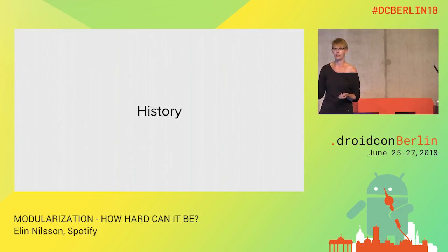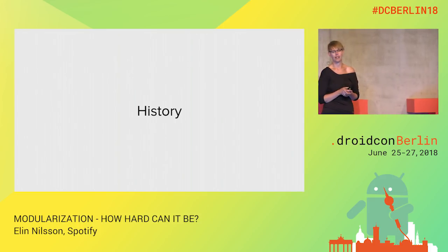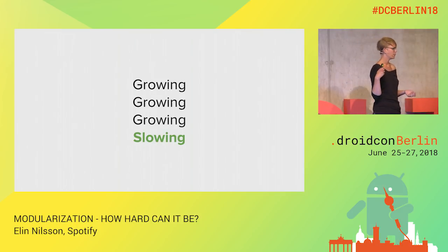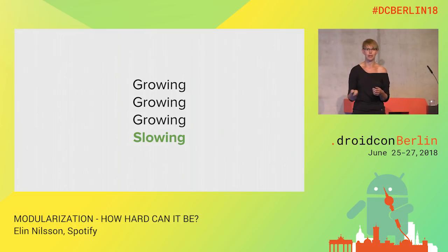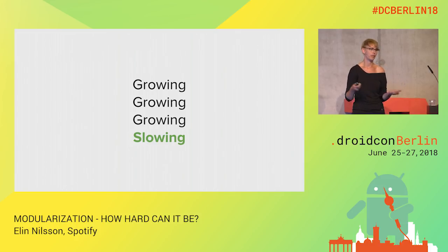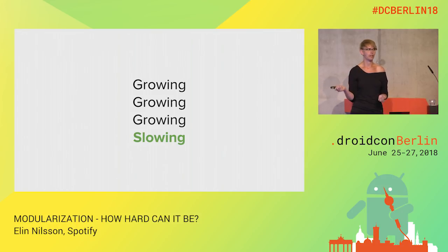To understand why we started modularizing at Spotify, you need to know some history. Mobile development at Spotify started around 2009, and since then it's been growing quite a lot. The number of teams has grown, the number of developers has grown, and the number of features in the app has obviously grown over the years. And if you have more features, you have more code — and if you have more code, it becomes very slow.